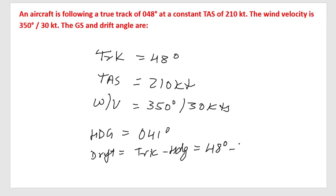48 degrees minus 041 degrees, equal to 7 degrees right, because it is positive.